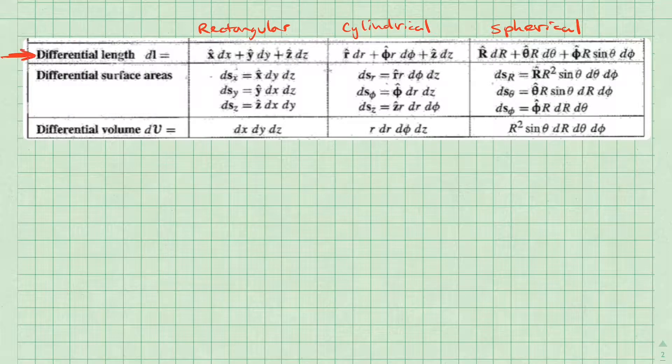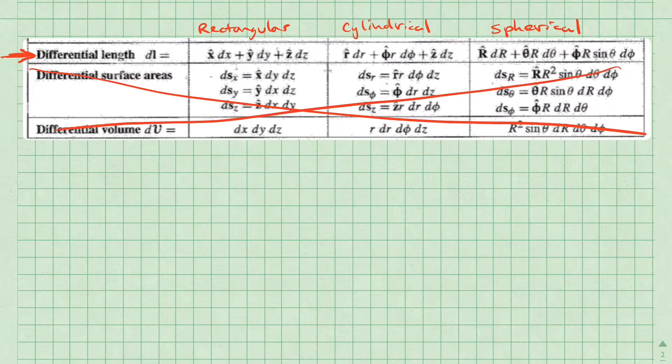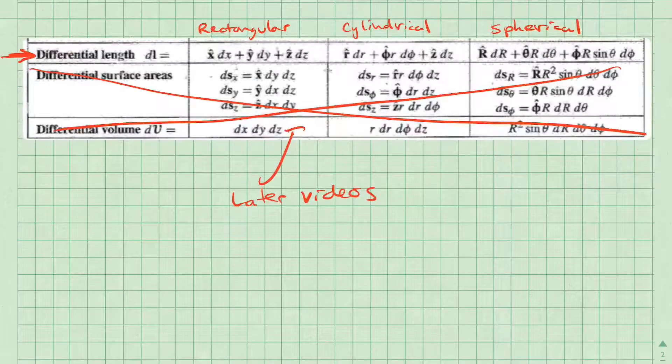We are going to refer to this table to find the correct differential length, which is in the first row. We will just choose the correct differential length for our coordinate system. Let's ignore the rest of this table for now. We will use it in follow-up videos.